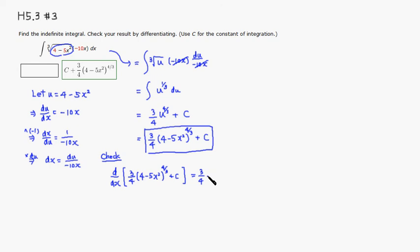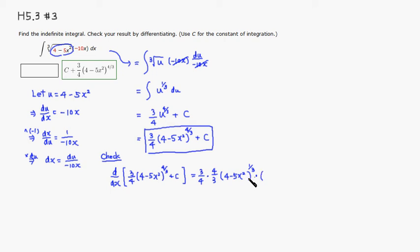Three quarters is a constant, so it stays. Using the general power rule, bring the four-thirds in front, keep the same quantity (4 minus 5x squared), subtract one from the power to get one-third, then multiply by the derivative of the inside — derivative of negative 5x squared is negative 10x.